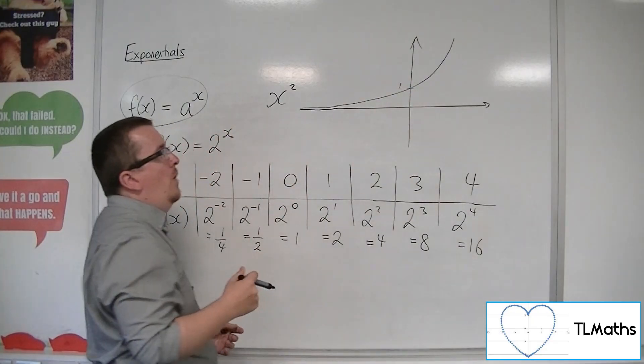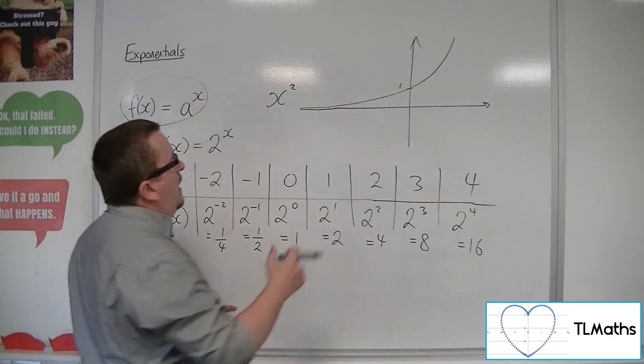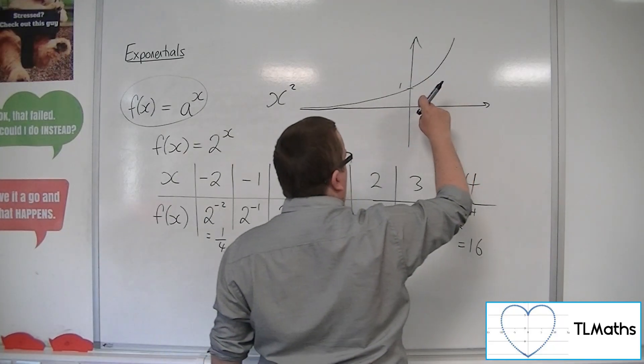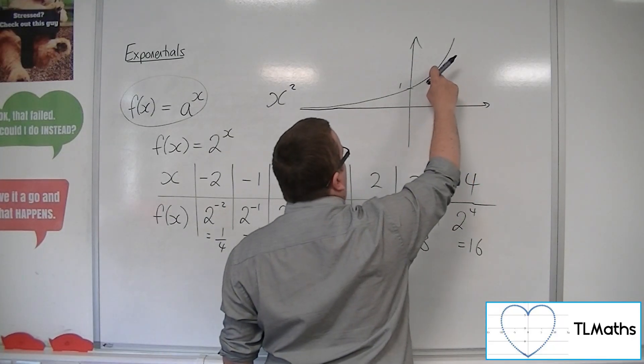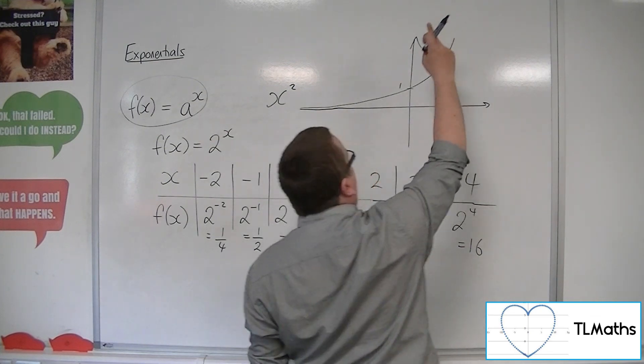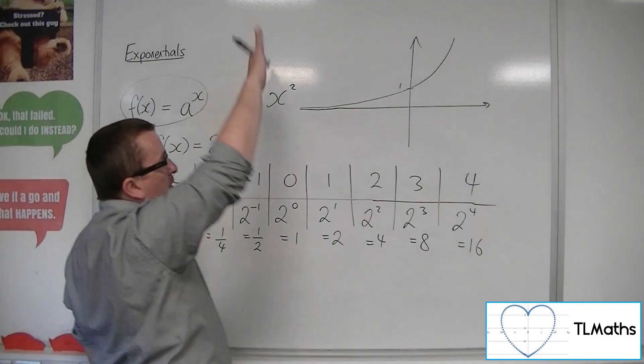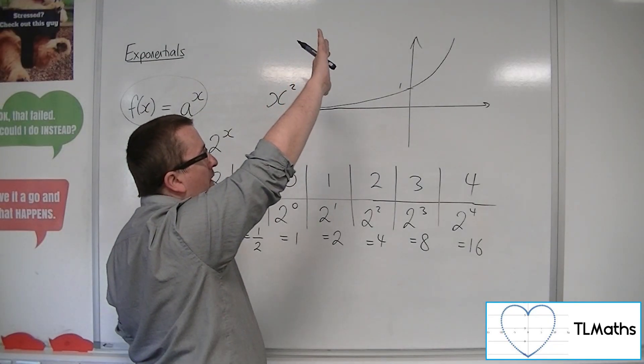So here we have a quarter, then a half, then we get to 0, so it's crossing the y-axis at 1. When we're going past it, we're going to 4. So when we're at 1, we're at 2, then we're going to get to 4, then 8, then 16, then 32, 64. And it's increasing faster and faster and faster.